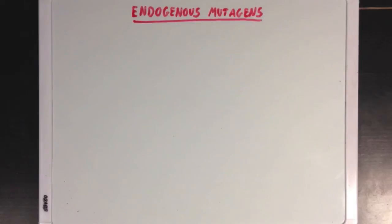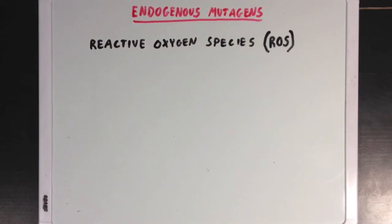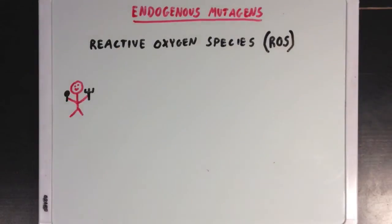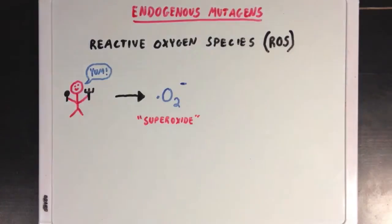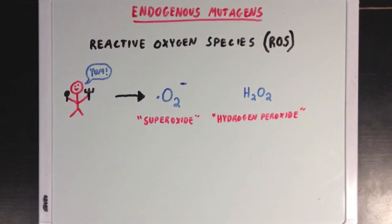The most significant endogenous mutagens are what we call reactive oxygen species, or ROS. ROS are naturally occurring metabolites in the human body that are produced by mitochondria during oxidative phosphorylation. During the metabolism of a meal, mitochondria will produce a bunch of ROS, like O2·⁻, which we call superoxide — an oxygen molecule with one extra electron — as well as hydrogen peroxide, which is another ROS the body can produce.